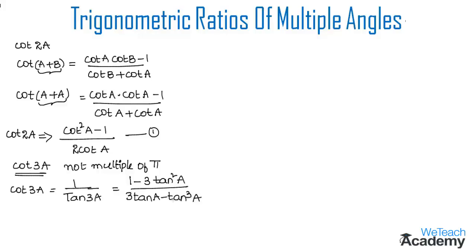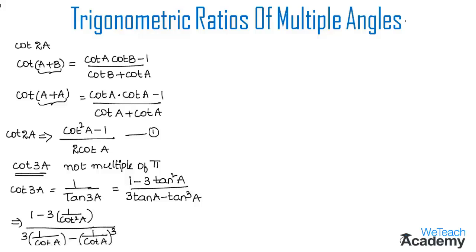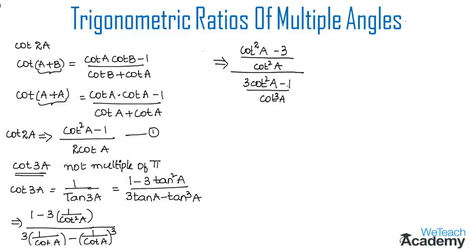We need the formula for cot 3a in terms of cot. By rewriting in terms of cot, we get: 1 − 3 · (1/cot²a) in the numerator, divided by 3 · (1/cot a) − (1/cot a)³. Simplifying, the numerator becomes (cot²a − 3) / cot²a, and the denominator has LCM cot³a with numerator 3 cot²a − 1. The cot²a terms in the denominators cancel, giving (cot²a − 3) / [(3 cot²a − 1) / cot a].